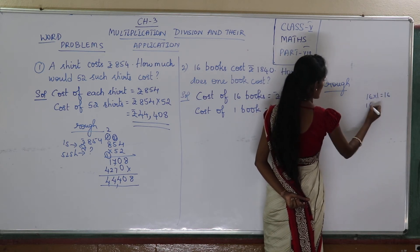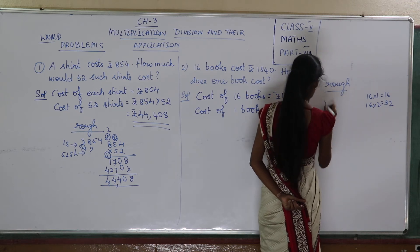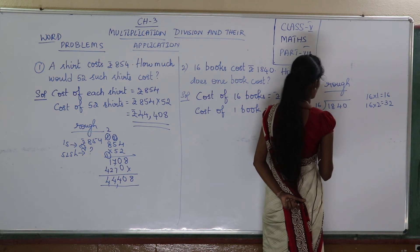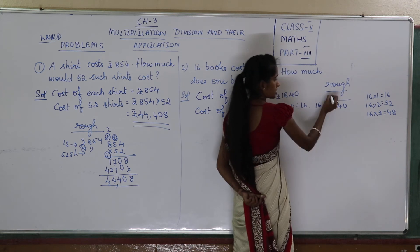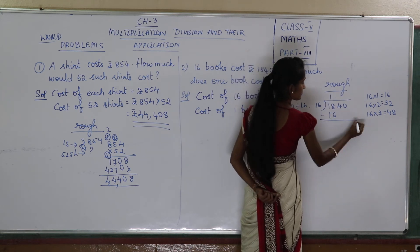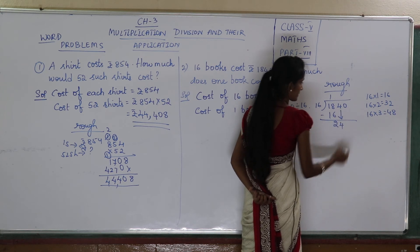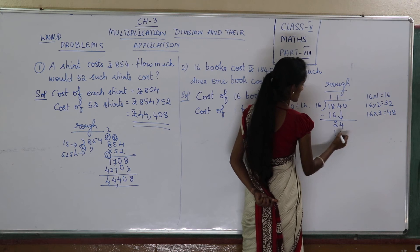16 once is 16. 2 times 16 is 32. Now checking if 18 minus 16 works, 8 minus 0 is 8, bring down 4 to get 24. Do we have 24 here? No.